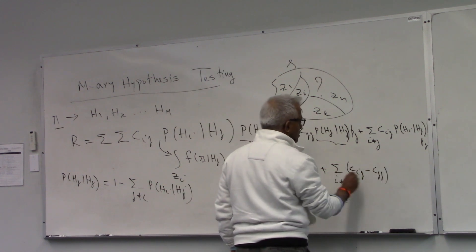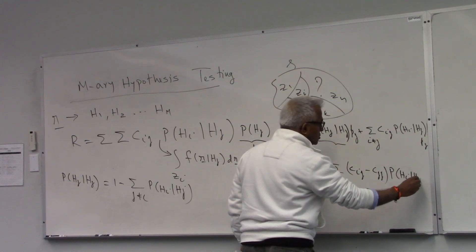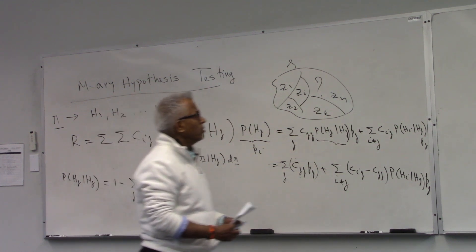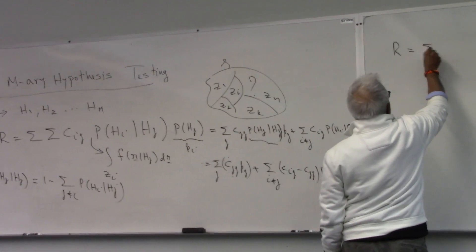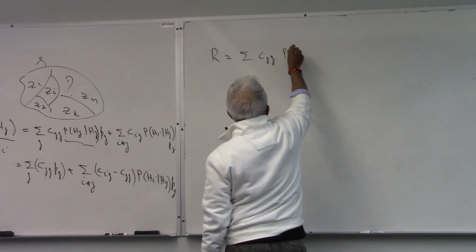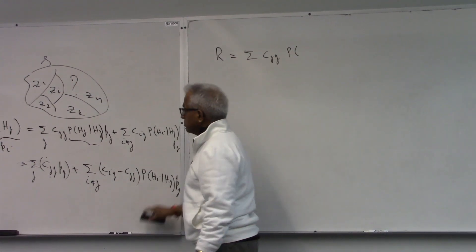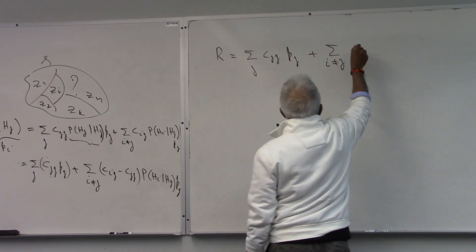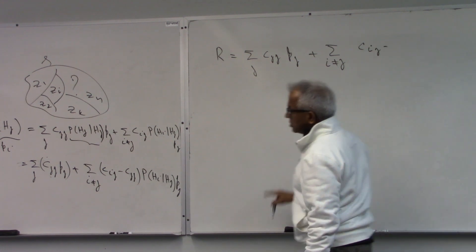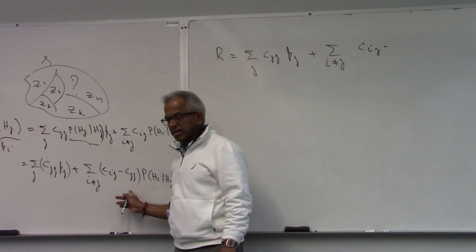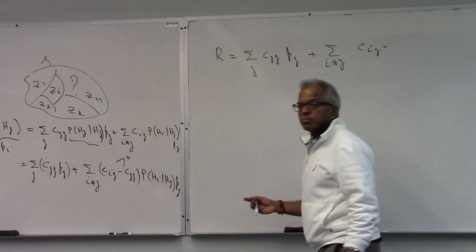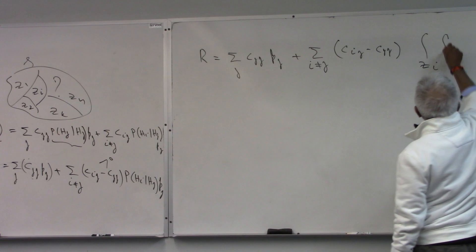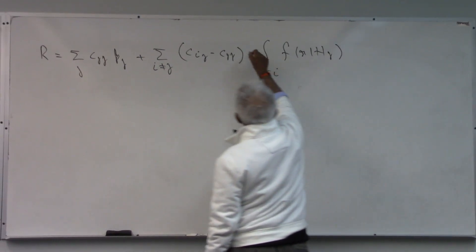This can be written as R equal to a fixed cost term — summation of Cjj times Pj — plus a variable term. Note that the cost for a bad decision is higher than the cost for a correct decision, so we can safely assume this difference Cij minus Cjj is positive. The variable part involves this difference times f(r given Hj) times Pj.